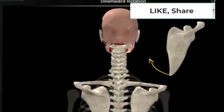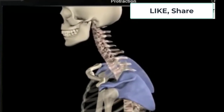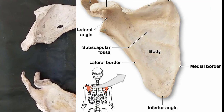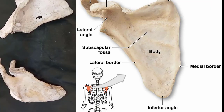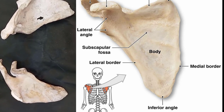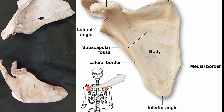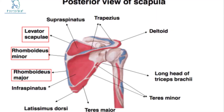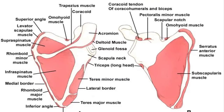The scapula also allows fixation of the shoulder joint and connection with the axial skeleton by the clavicle. It consists of three borders: lateral border, medial border, and superior border. Six muscles attach the scapula bone to the trunk and enable the scapula to function as an anchor point for the muscles and bones of the arm: trapezius, levator scapulae, rhomboids, serratus anterior, and pectoralis minor.